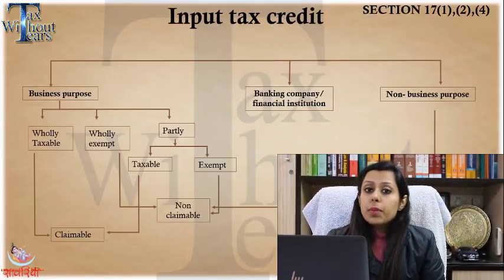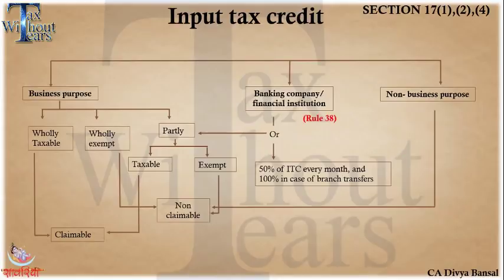For the exempt portion and the non-business purpose, you are not eligible to claim the credit. For banking companies or financial institutions, the council has given two ways: either segregate output supplies as taxable and non-taxable and claim ITC in the same proportion, or simply take only 50% of the total eligible credit and reverse the remaining 50%. At the same time, 100% ITC is allowed in case of branch transfers — if you are giving services, input goods, or capital goods to branches, 100% ITC is allowed and you need not apply the 50% restriction.